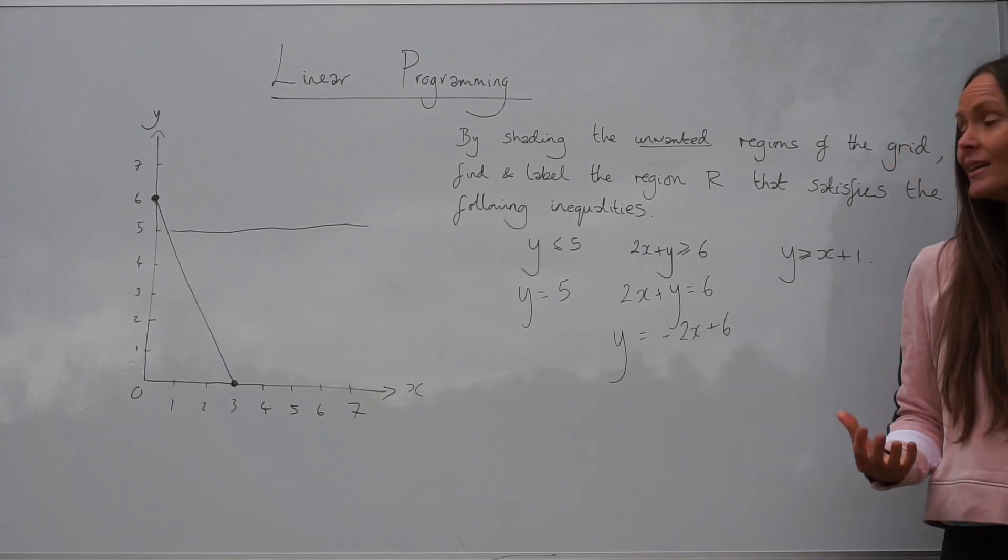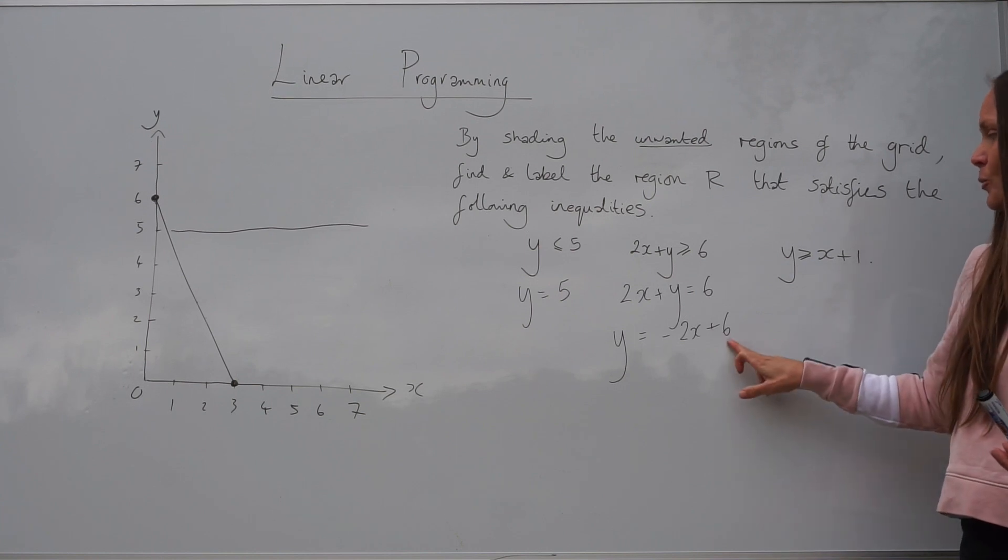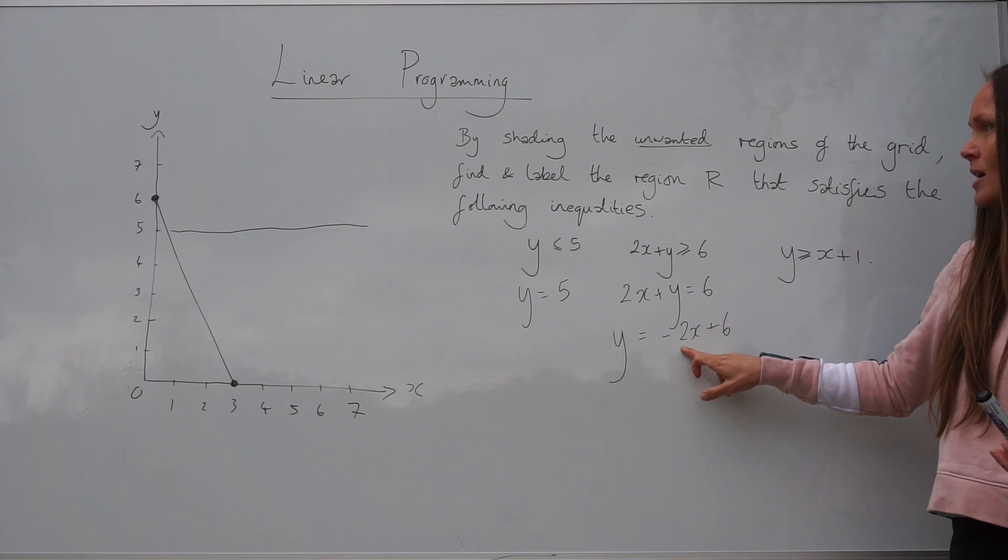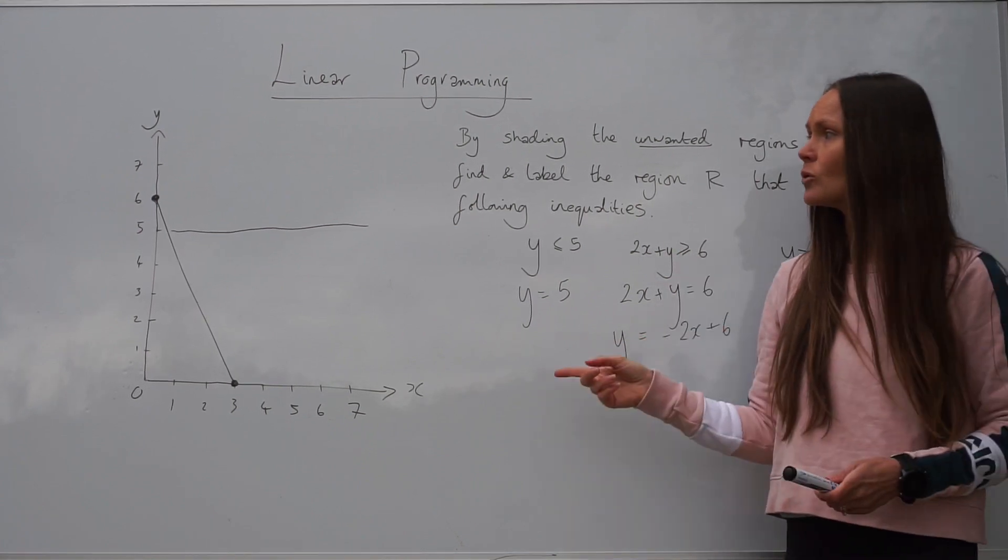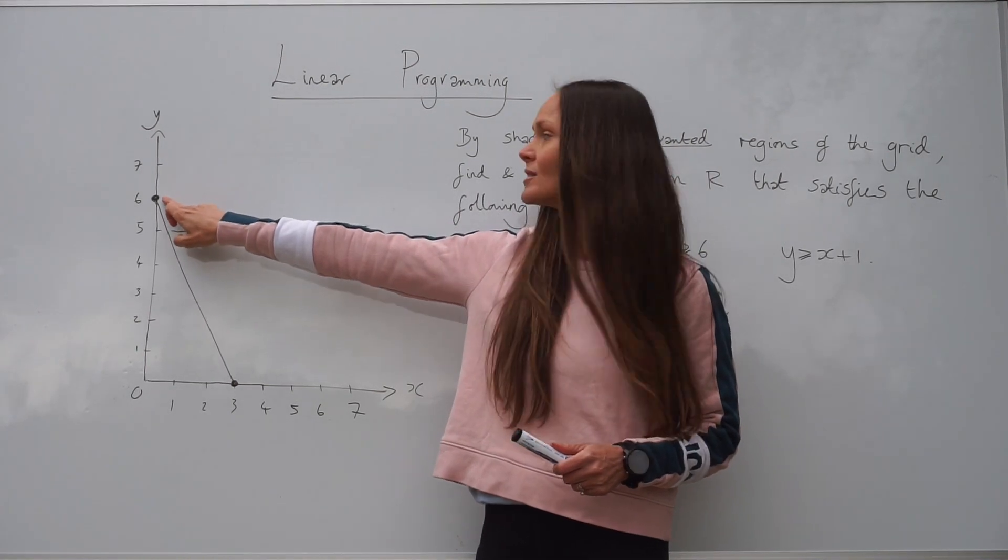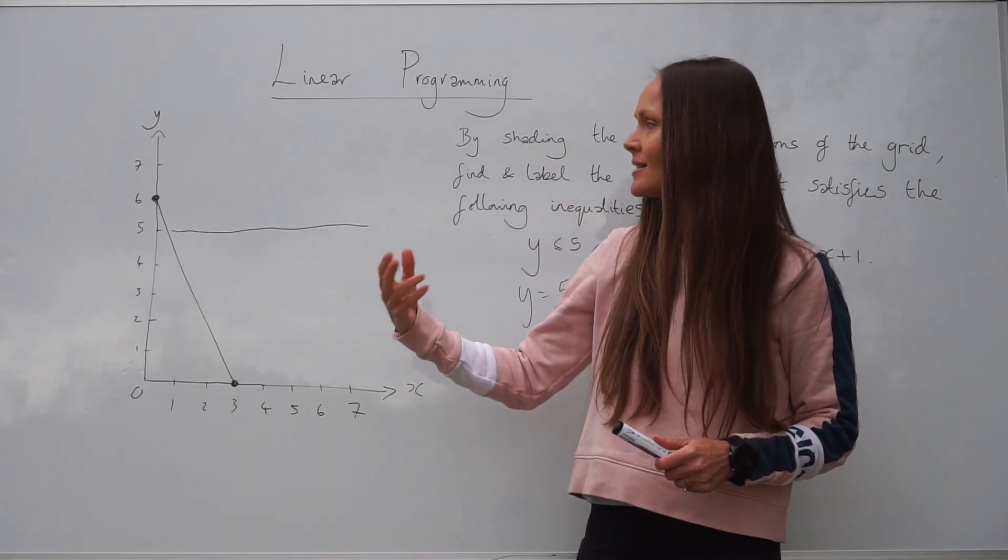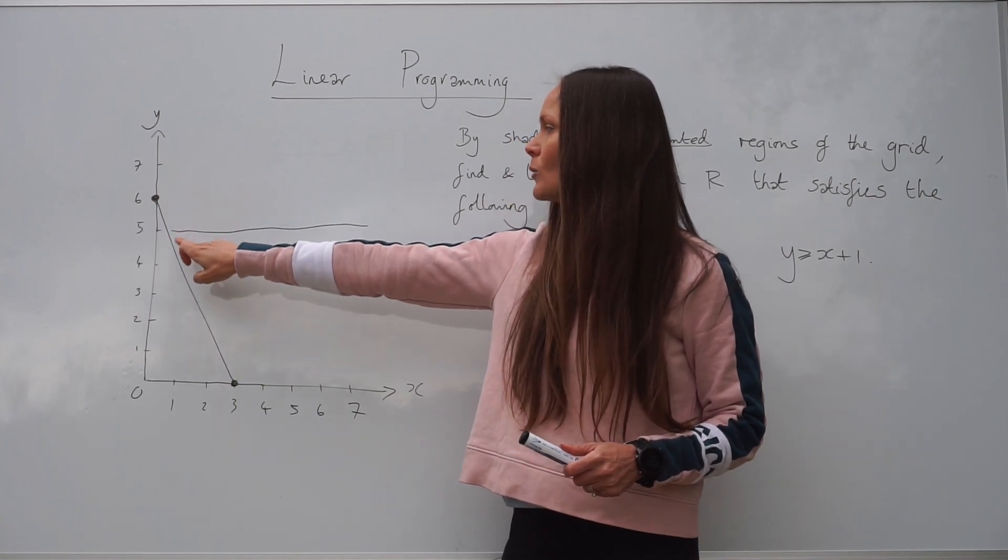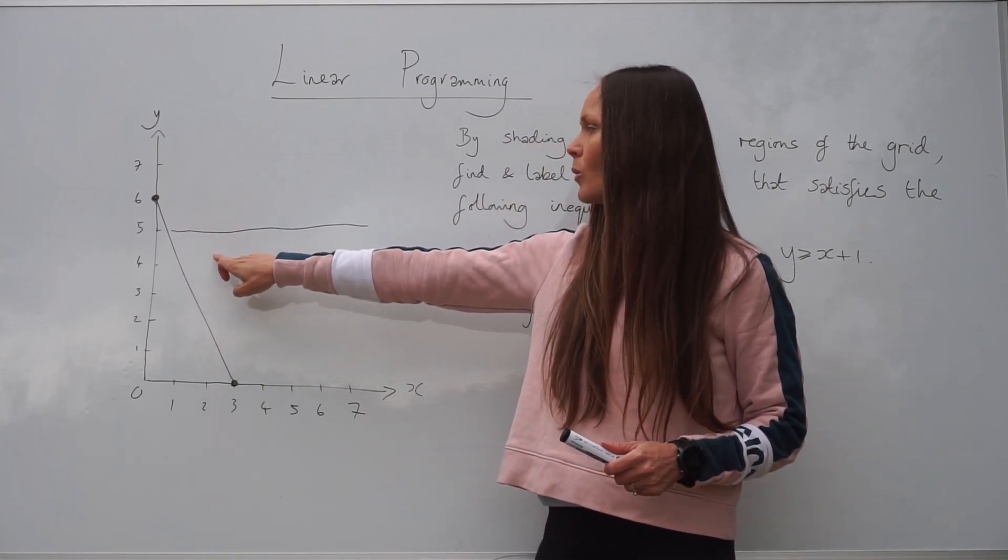So you can see that the y-intercept of this straight line is positive 6, and the gradient is negative 2. So it's actually the line that's been drawn on the grid already for us. Here's the y-intercept, positive 6, and the gradient is negative 2, because when we go along one unit to the right, we go down 2, along 1, down 2, along 1, down 2.